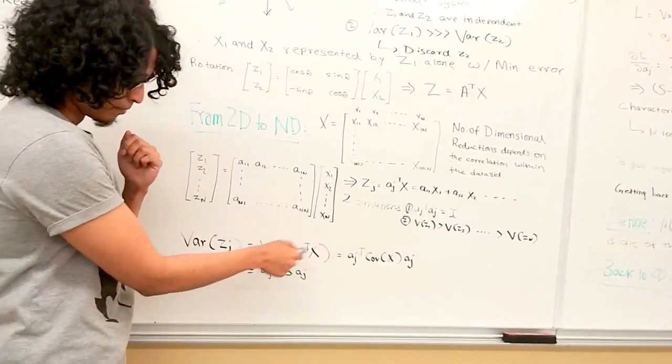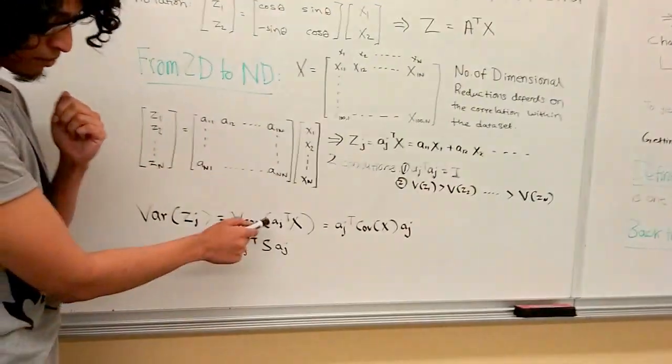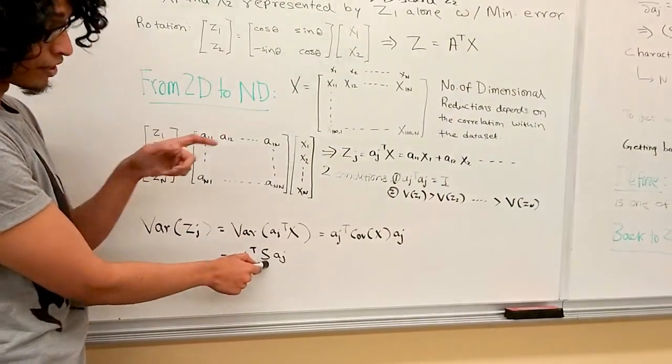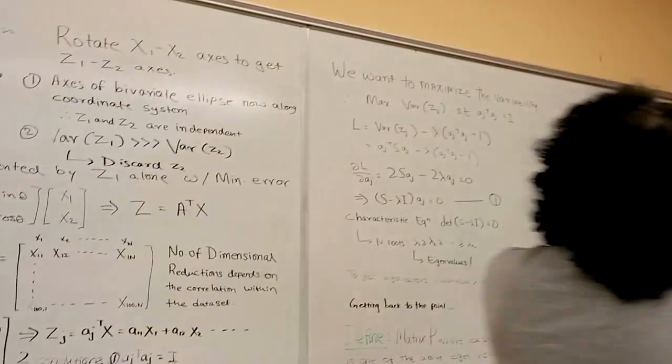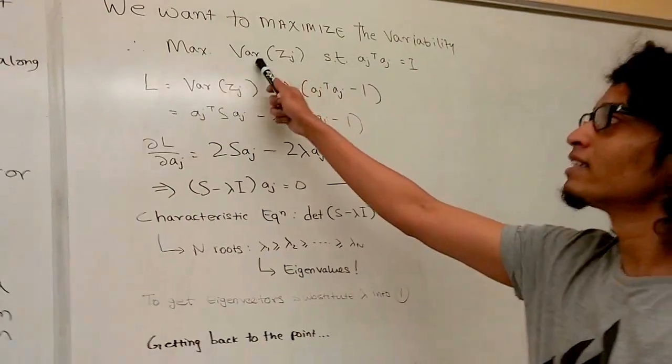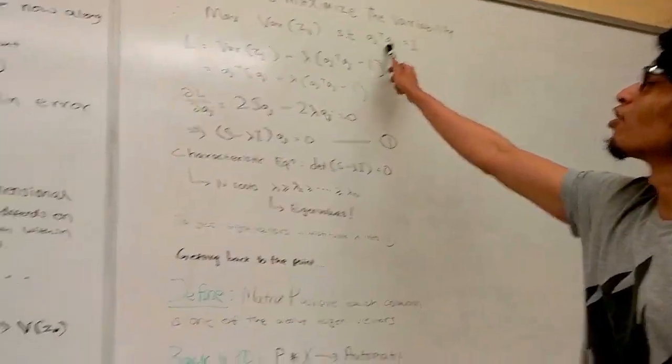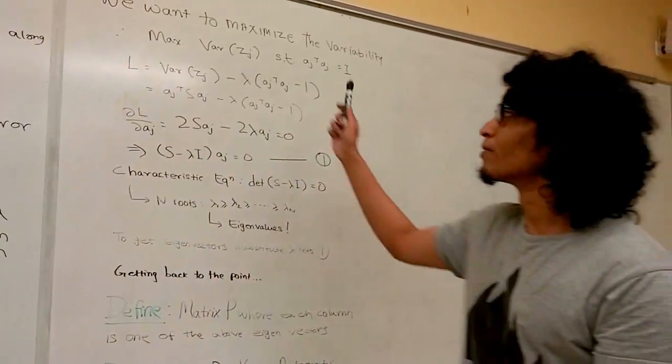Variability of z of j equals the variability of aj transpose times x, which is just aj transpose times the covariance matrix of your original data set times aj. Our problem essentially boils down to maximizing that variability such that orthogonality is maintained, which is a constrained Lagrangian maximization problem.